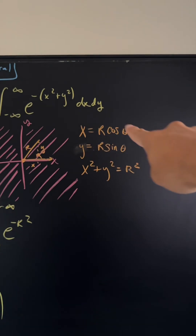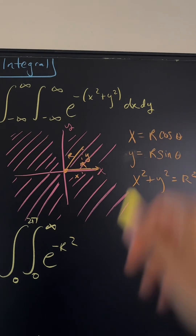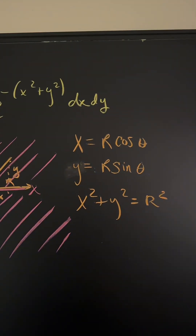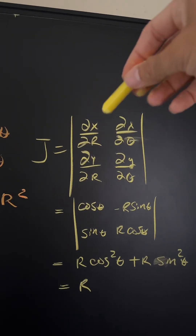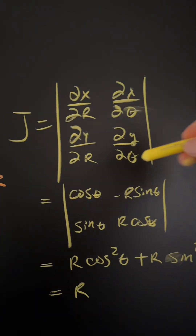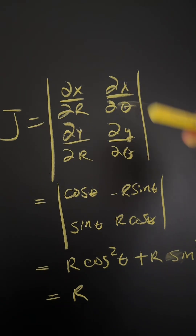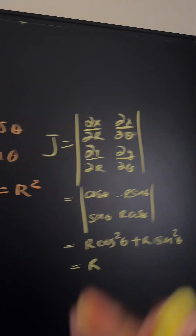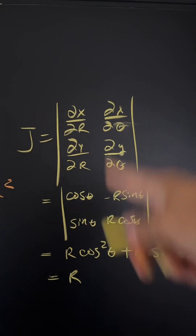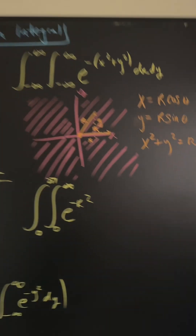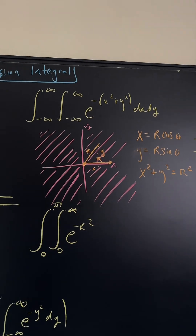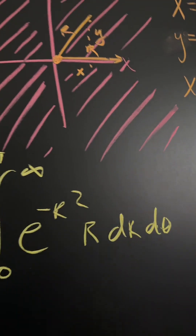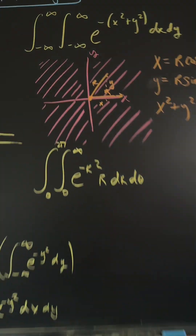We changed everything in terms of r and theta, but we need to account for the change of variables from dx dy. There's a nice way to do this called the Jacobian. The Jacobian is defined using the partial derivatives of x and y with respect to r and theta. It tells us the scaling factor for dx dy, and the determinant of those values gives us r. So whenever you're converting to polar coordinates in a double integral, the Jacobian will always be r, meaning we place an r here and our dx dy becomes r dr dθ.